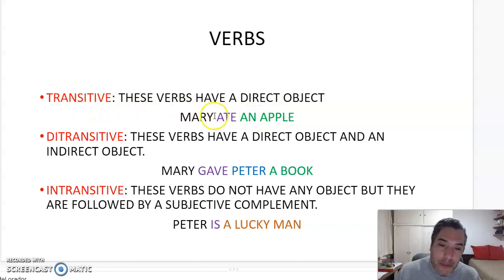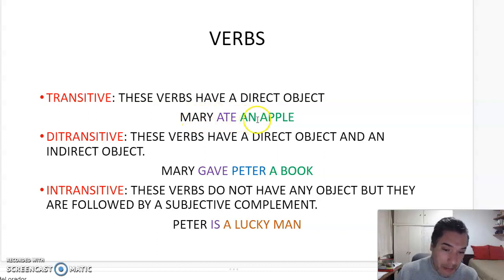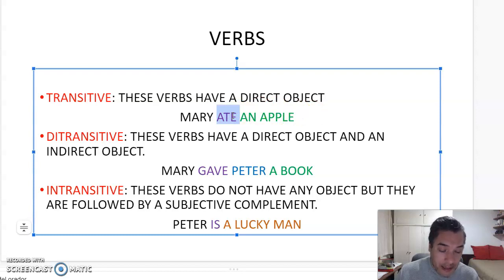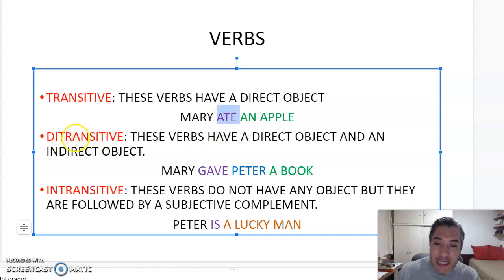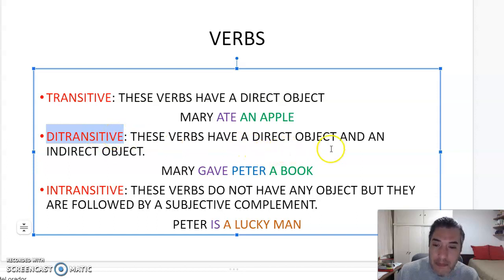Transitive verbs are those followed by a direct object. For example, 'Mary ate an apple.' What did she eat? She ate an apple. If you can answer the question 'what?', it is a transitive verb. Ditransitive verbs are the ones that have both a direct object and an indirect object, mainly used with the verb 'give.' For example, 'Mary gave Peter a book.' Here 'gave' is ditransitive.